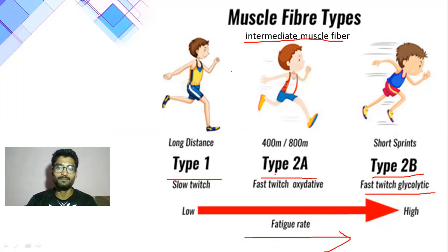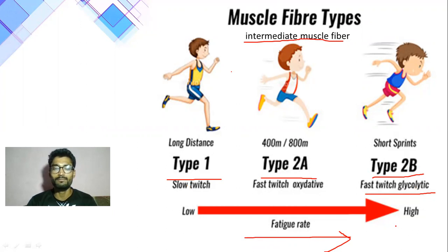Type 2A and Type 2B — Type 2B is the most fatigued of your muscle fibers.